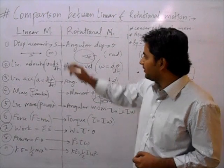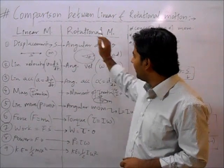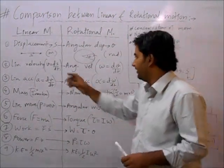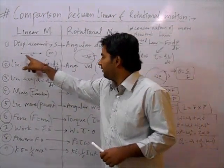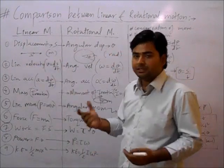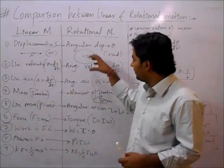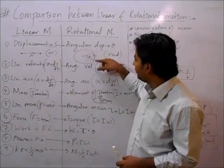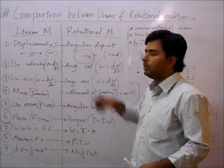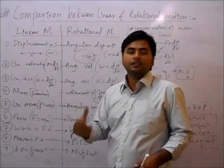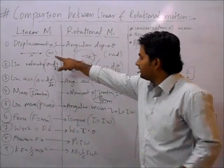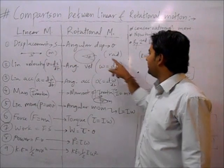In rotational motion, we define angular displacement. In linear motion, displacement S is written in meters. In rotational motion, the angle through which a body rotates is called theta — the angular displacement — and its unit is radians.